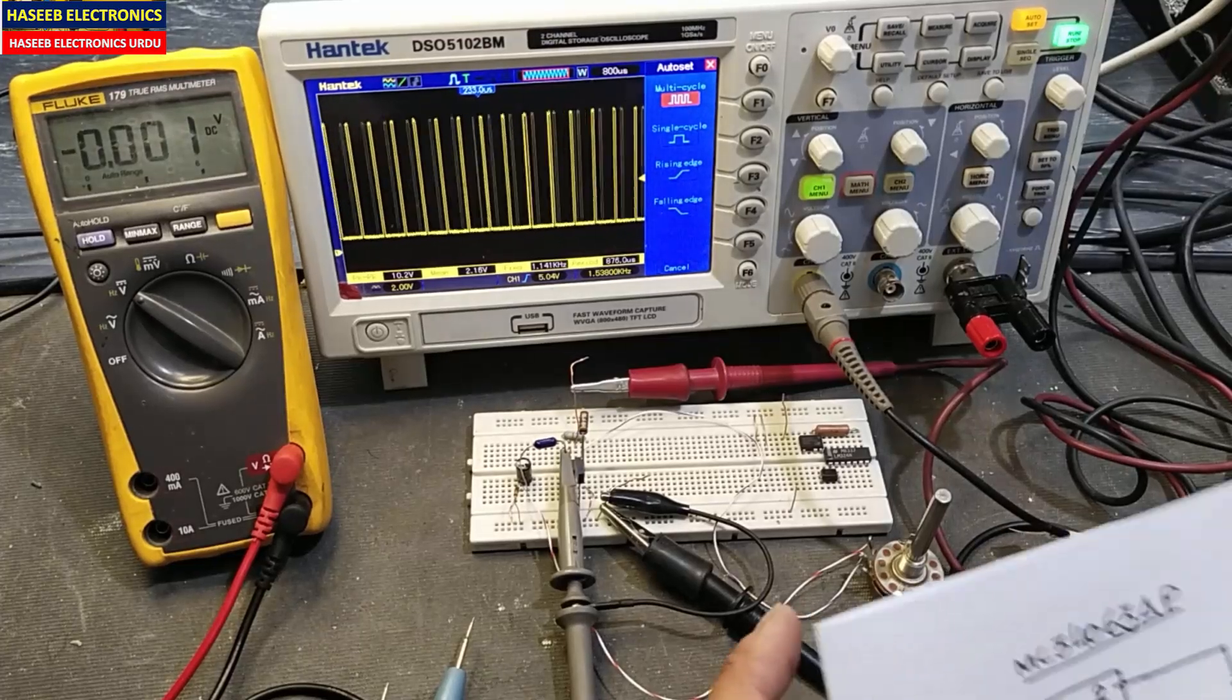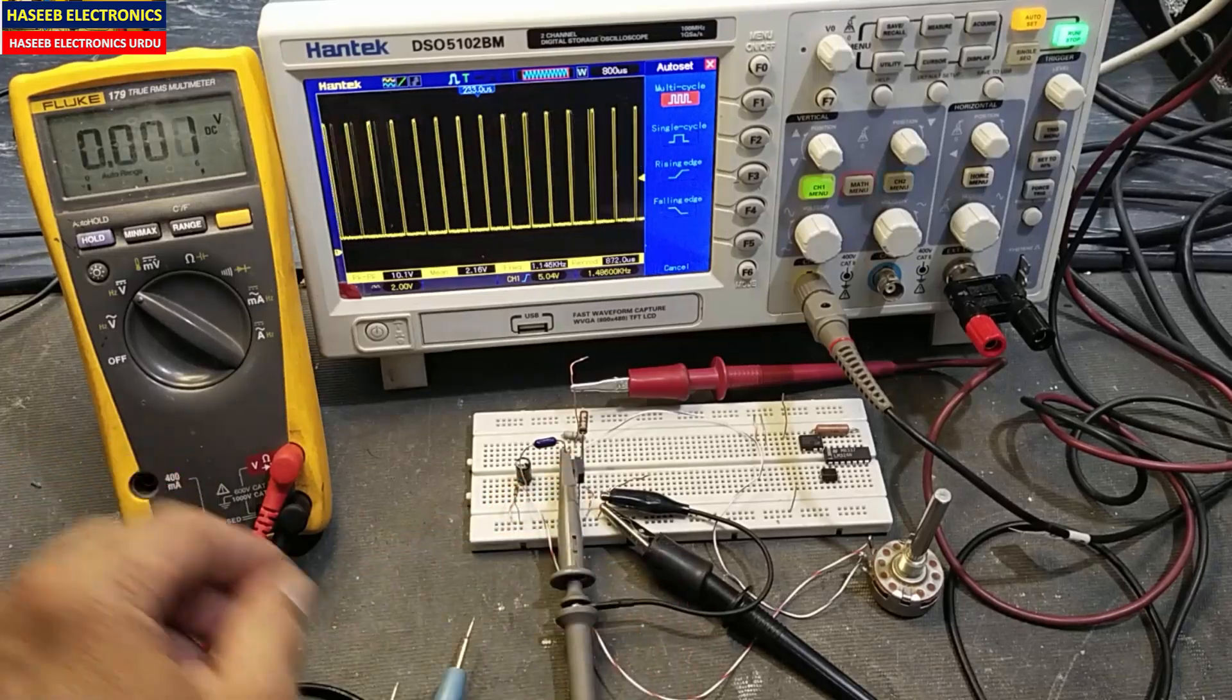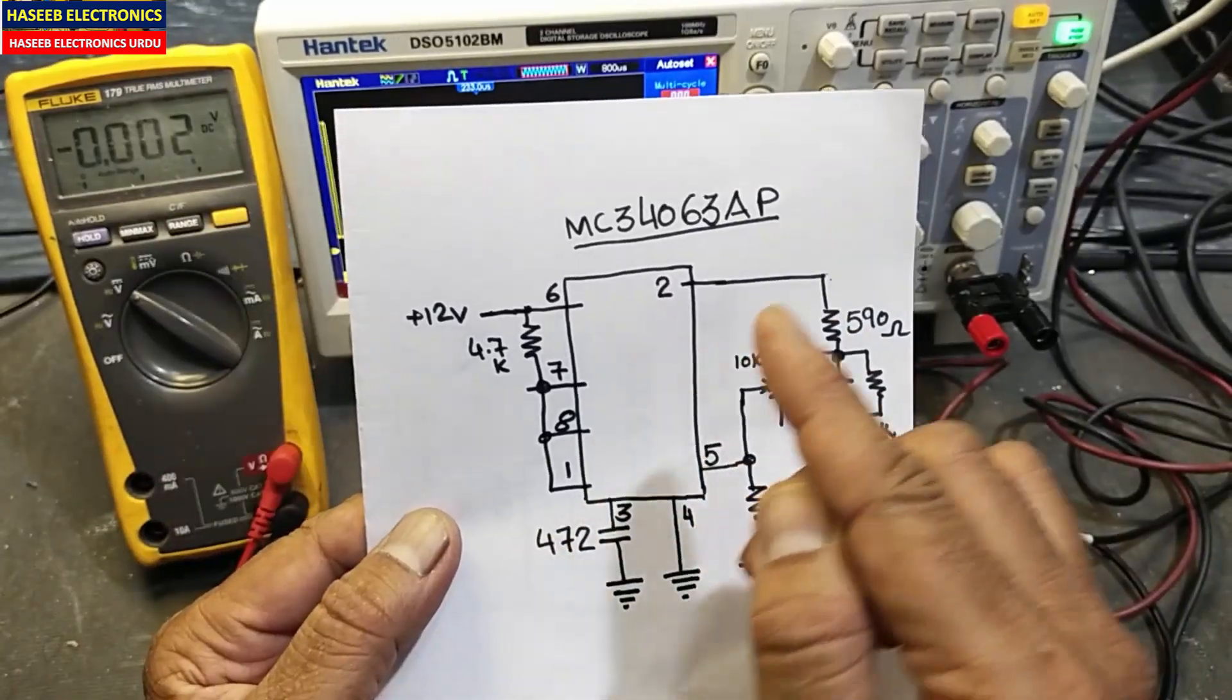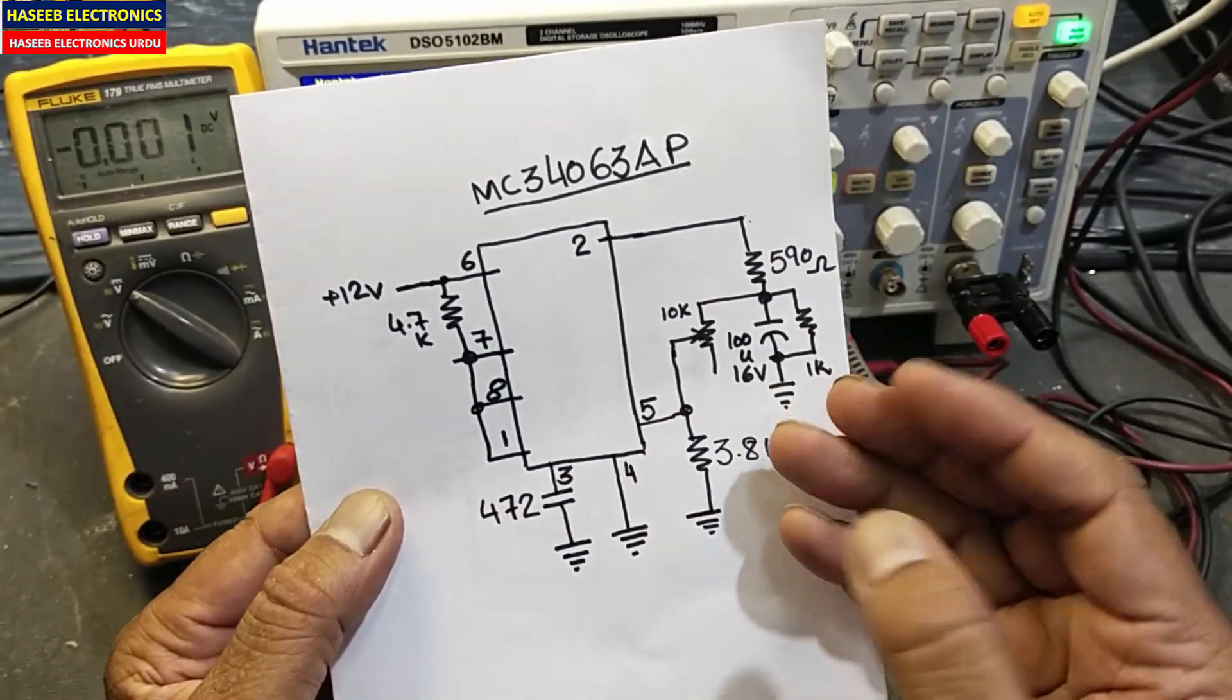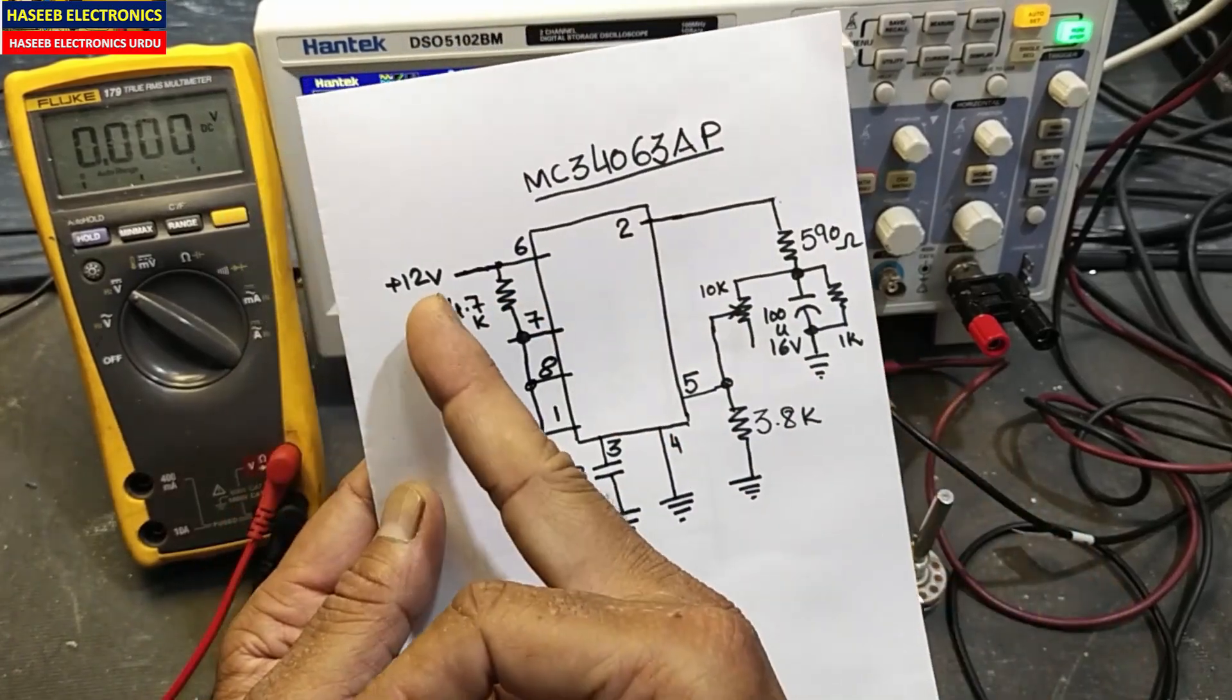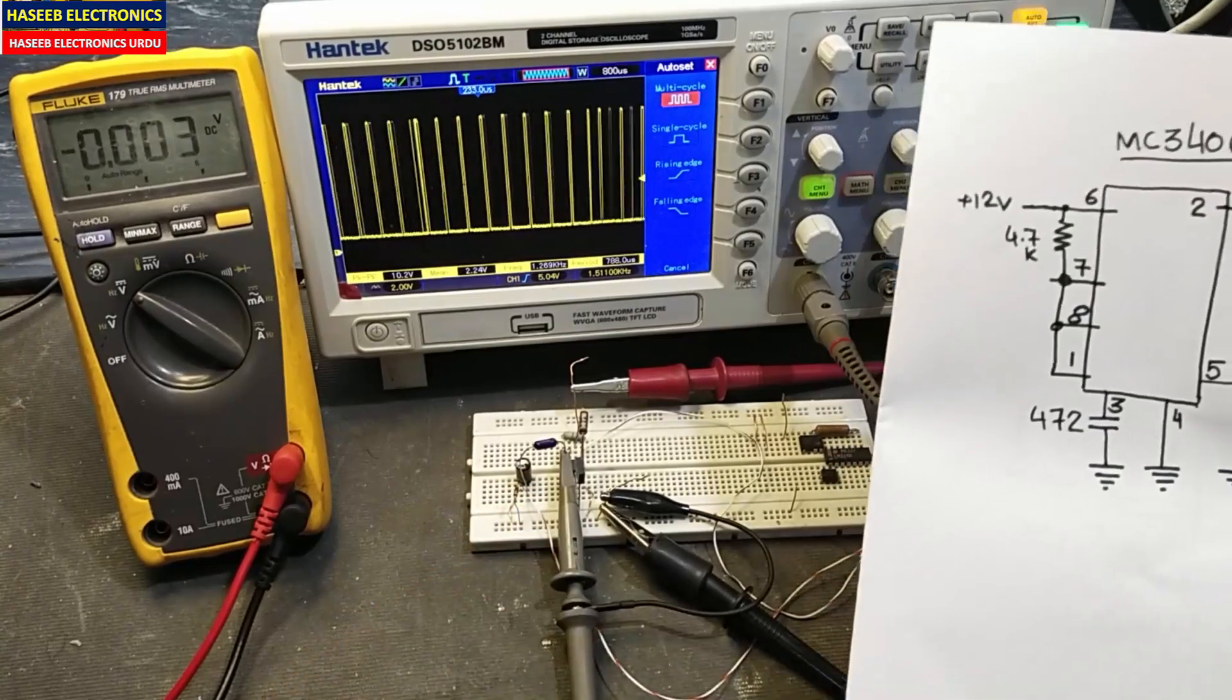Assalamualaikum warahmatullahi wabarakatuh friends, welcome back to my channel. In this session we will see how we can test MC34063 buck-boost controller IC. It is very commonly used in converters. I am not using any inductor here, I am using resistors and very common components to test it. You can verify it very easily.